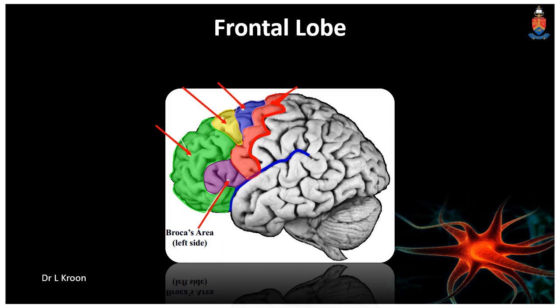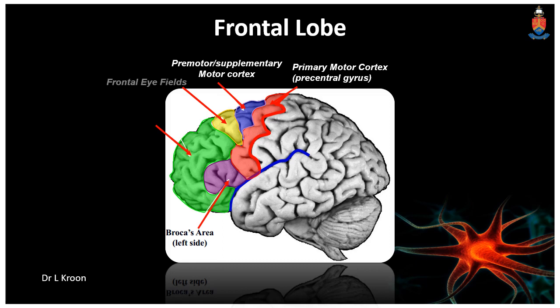Showing some areas of more interest in the frontal lobe again: just anterior to the central sulcus is the primary motor cortex, lying next to the premotor or supplementary motor cortex, which is an association area. Just anterior to that, we see the frontal eye fields, primarily involved in eye movements. And here we see the prefrontal cortex, associated with a variety of higher cognitive executive functioning, containing a number of different association areas. Shown here in the inferior frontal lobe on the left, we can see Broca's area, associated with expressive language.